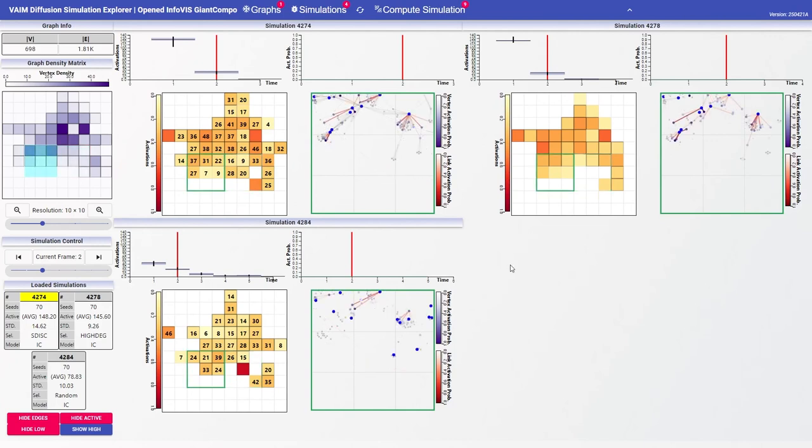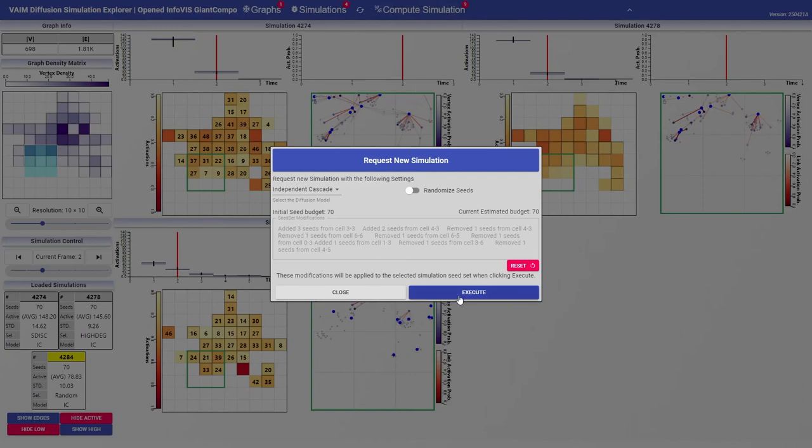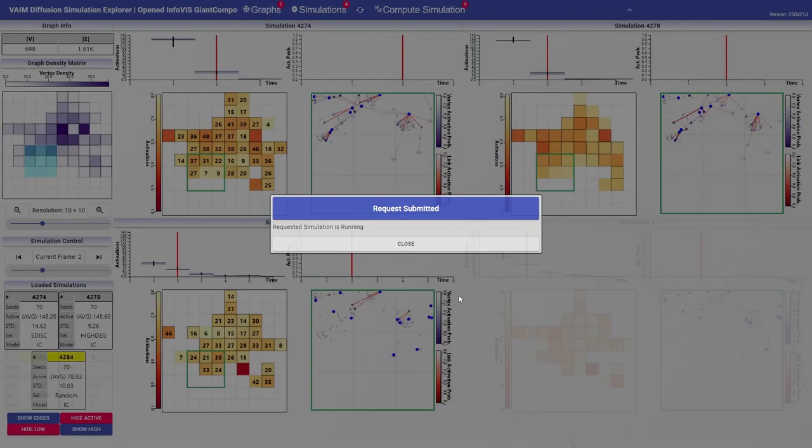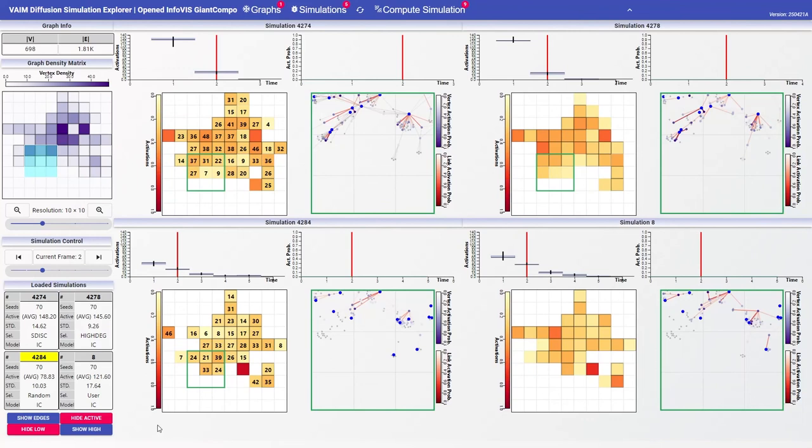The new simulation is requested with a list of modifications to be applied on the seed set of the selected simulation, in this case the random one. Once ready, it is shown as available in the system. With our modified seed set we obtain a significant improvement in terms of spread over the original one.